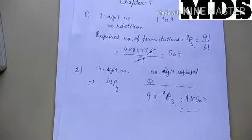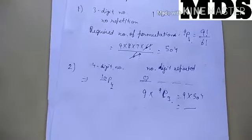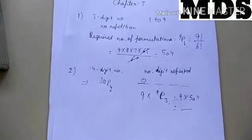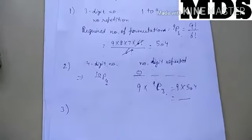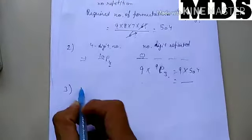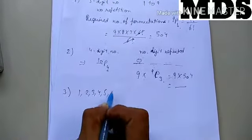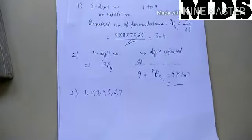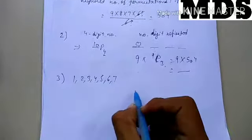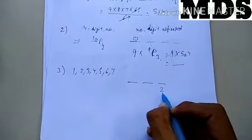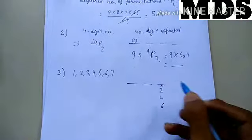Now, how many 3-digit even numbers can be made if no digit is repeated? The digits given are 1, 2, 3, 4, 5, 6, and 7. We have to make 3-digit even numbers.